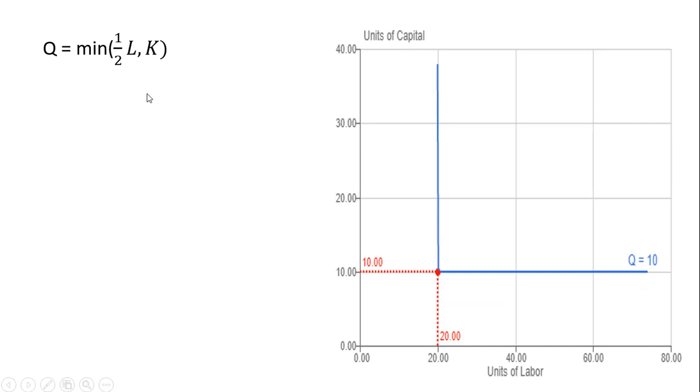Let's do another example. Output equals a minimum of 1 half L or K. Let's find an isoquant for 10 units of output. Setting 1 half L equal to 10, solving for L, we get 20. And just setting K equal to 10, we have that point, that elbow point on the isoquant. So we have that elbow point on the isoquant, a horizontal line to the right, and a vertical line upwards, we graph our isoquant.